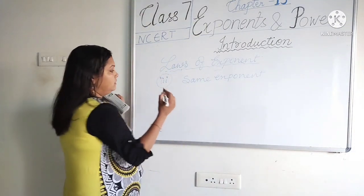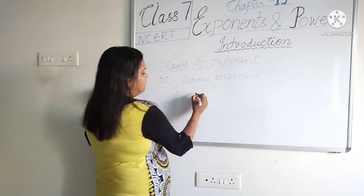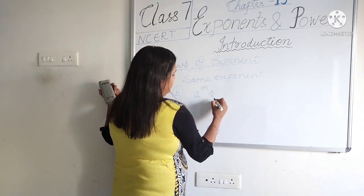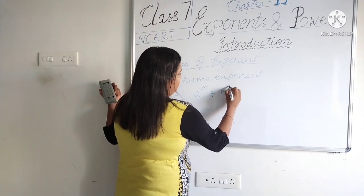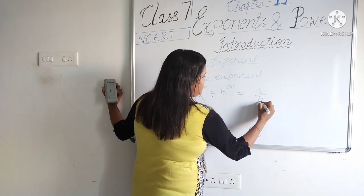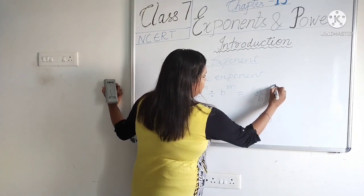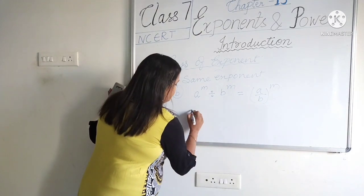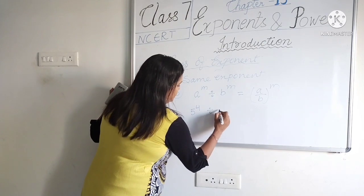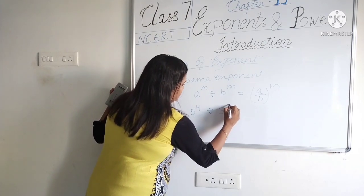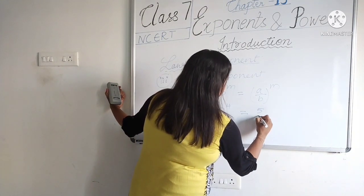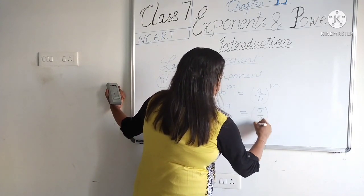Similarly, for division with the same exponent: a^m ÷ b^m = (a/b)^m. For example, 5 raised to the power 4 divided by 3 raised to the power 4 can be written as (5/3) raised to the power 4.